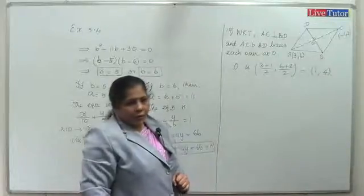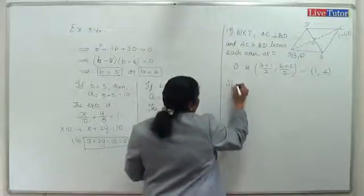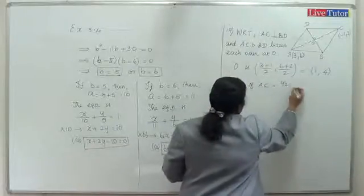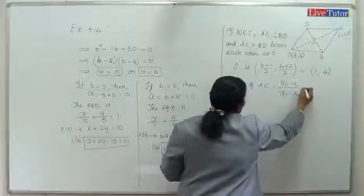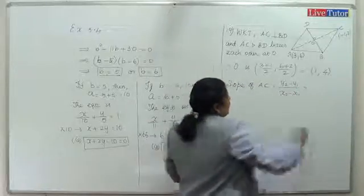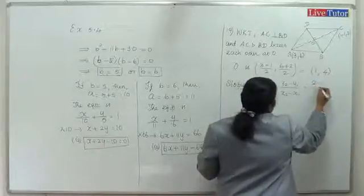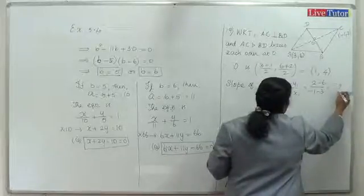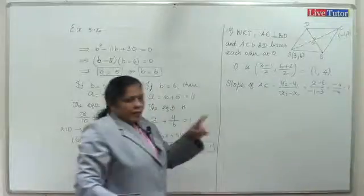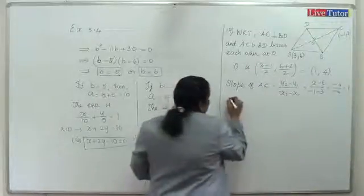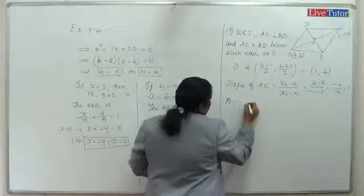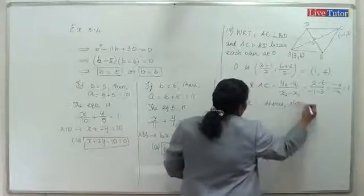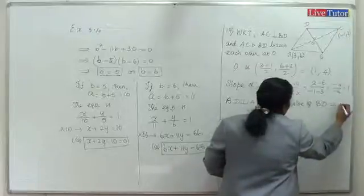Slope of AC: using formula (y2 - y1)/(x2 - x1). y2 is 2, so (2 - 6)/((-1) - 3) equals (-4)/(-4) which equals 1. Slope of AC is 1. Since BD is perpendicular to AC, slope of BD equals -1.